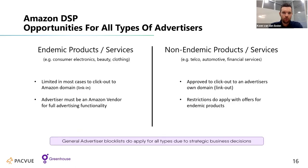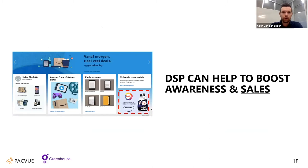Looking at the opportunities for all types of advertisers, we consider both endemic and non-endemic. What I see most often in the market is that DSP plays a role in the awareness phase, but with e-commerce data it also becomes a sales tool. The Amazon DSP can help to boost both awareness and sales — and that is very important to mention.